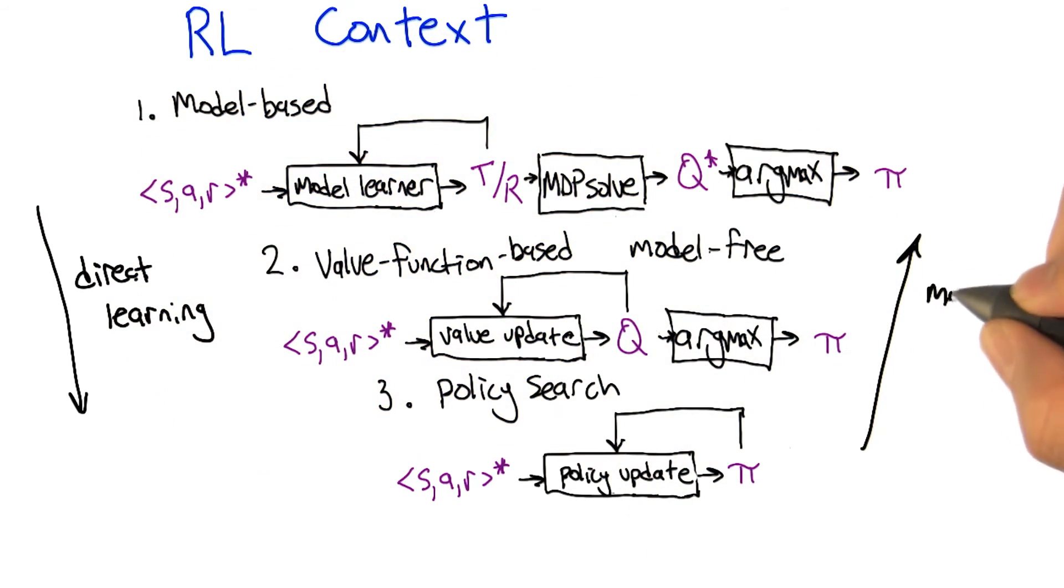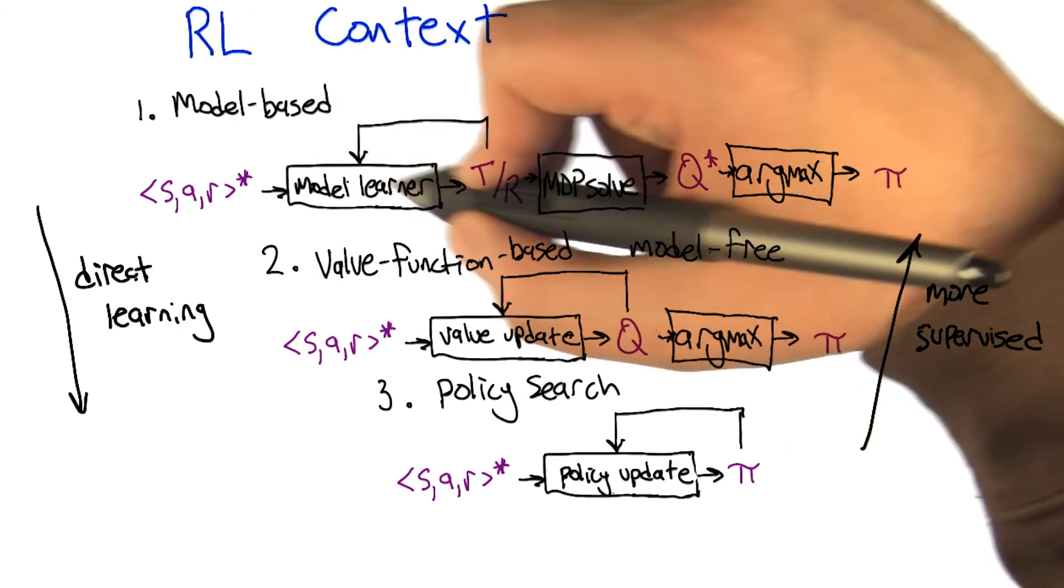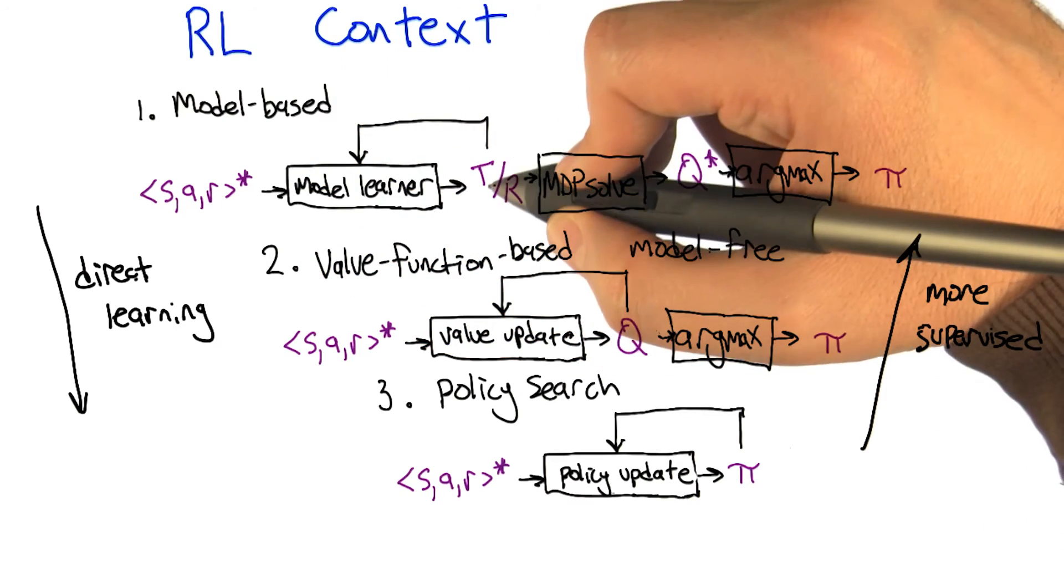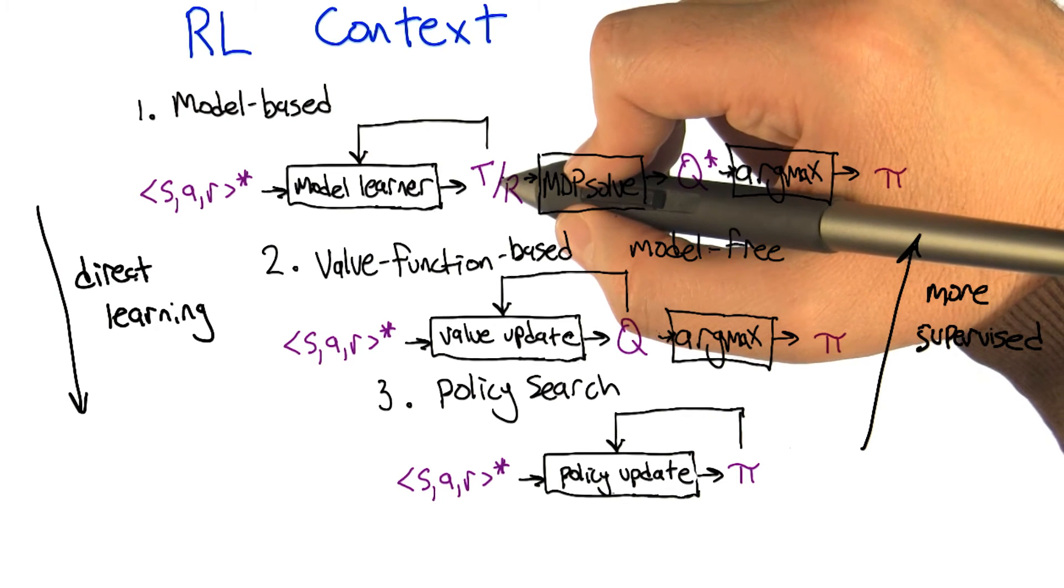And as we go up this way, the learning problems become more supervised. In the sense that you can imagine learning to predict next states and next rewards from previous states and previous rewards to learn T and R pretty directly.